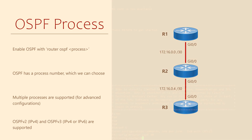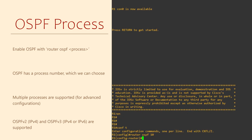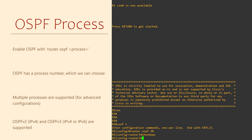If we want to stop the OSPF process we have two options. One is to remove the OSPF configuration. The other is to enter the shutdown command. This is more gentle as it keeps all our configuration in place and allows us to turn it on again with no shutdown.